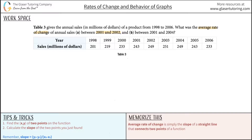Let's take a look at letter A first. Before we start to calculate anything, we have to understand what the average rate of change means. The average rate of change is simply the slope of a straight line that connects two points of a function.